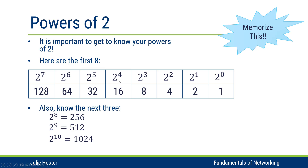What we're really doing each time is doubling the preceding number. One times two is two, two times two is four, four times two is eight, eight times two is sixteen, sixteen times two is thirty-two, double that we get sixty-four, double it again we get one twenty-eight.